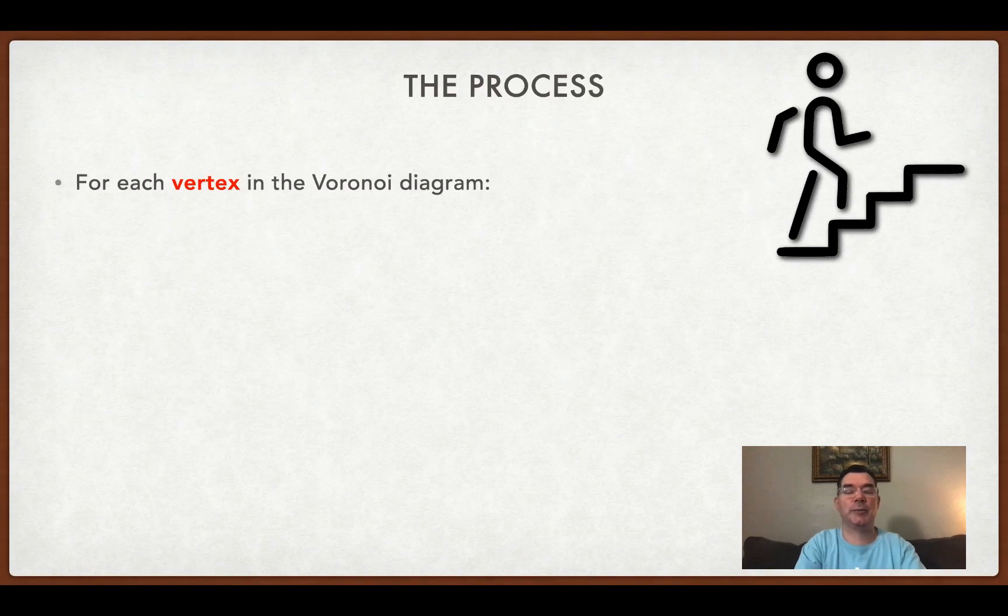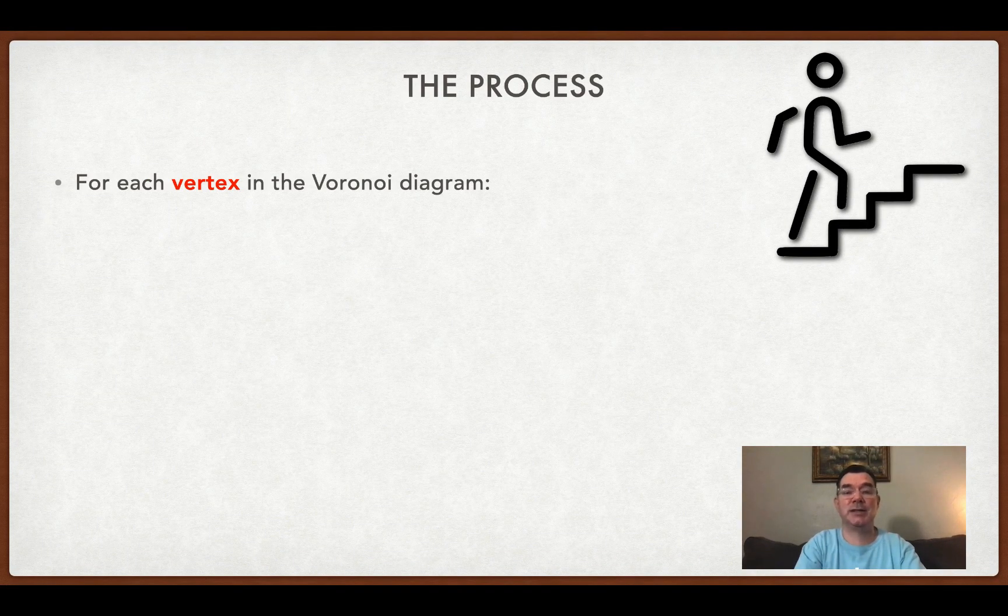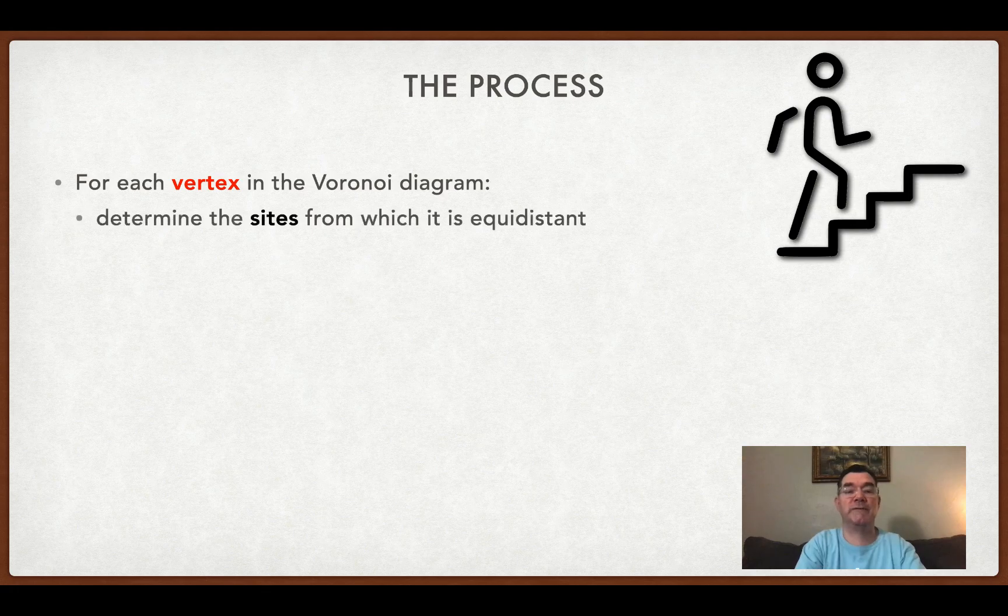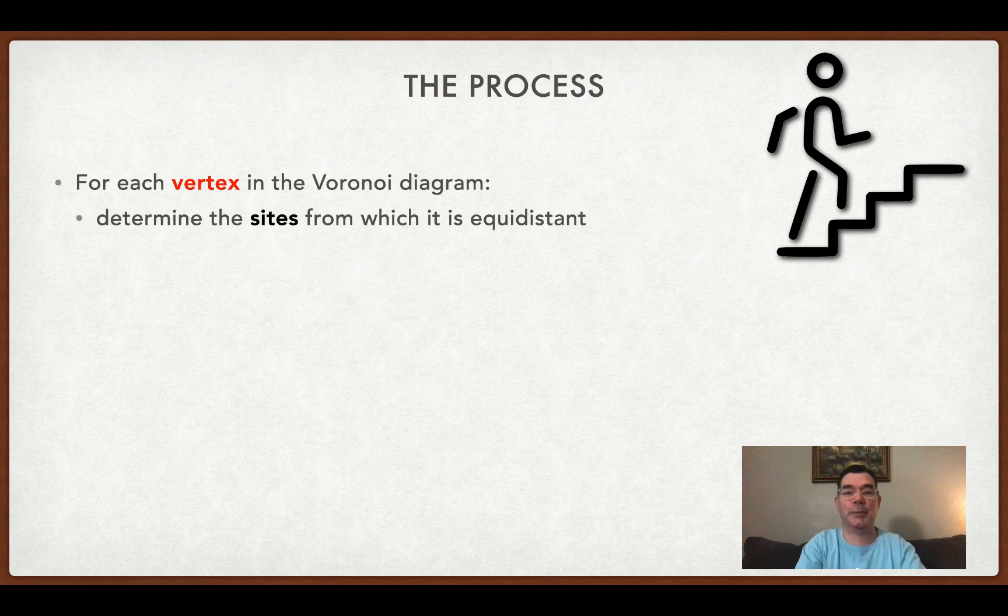So let's talk about the process. For each vertex in the Voronoi diagram, what we're going to do is we're going to figure out what sites that vertex is equidistant from because it's always equidistant from three sites. That's the definition of what a vertex is.